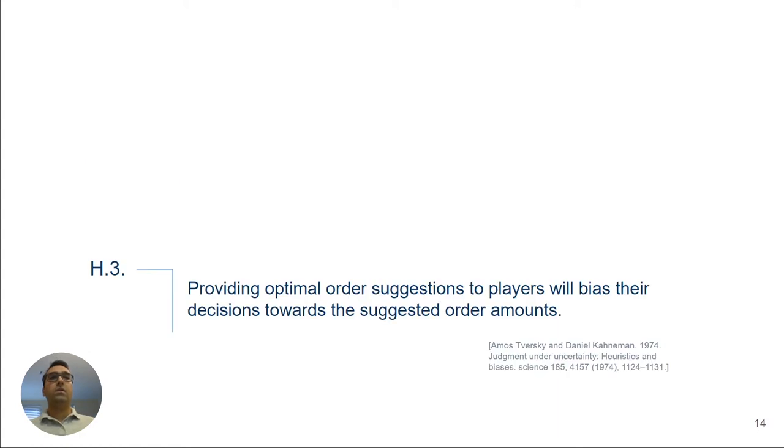And finally, previous studies also used anchoring and adjustment heuristics to model human decision making under uncertainty and showed that people often make decisions by starting from an initial value and then adjusting that to make a final decision. If this final decision is suggested to the decision maker, their adjustment is expected to be biased towards that suggested anchor. So we expect to see this anchoring in players' behavior when we provide them with optimal order suggestions according to an optimal ordering policy. In fact, we want to see if the gamette as a methodology can capture these biases in the behavior of the players.